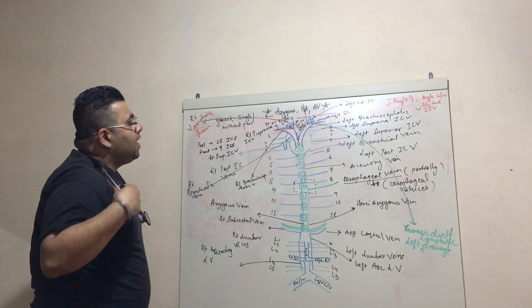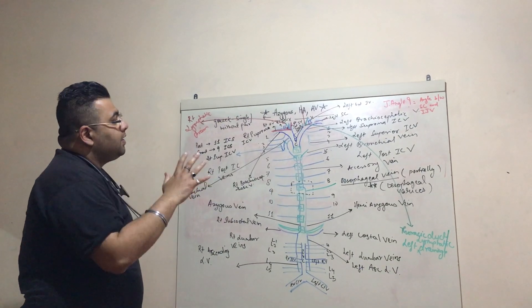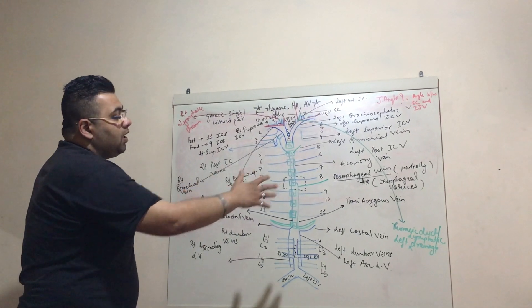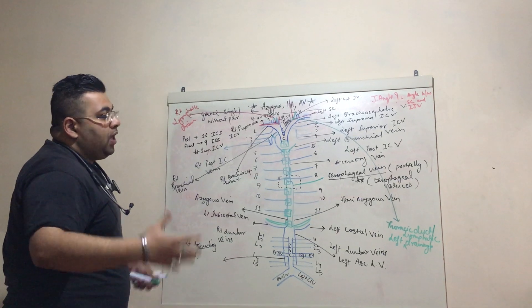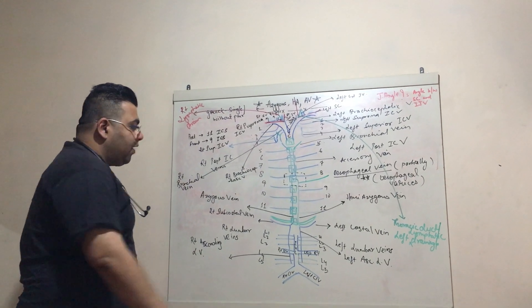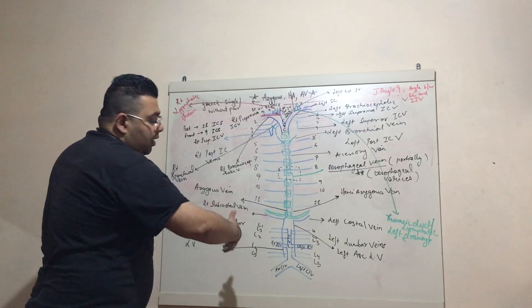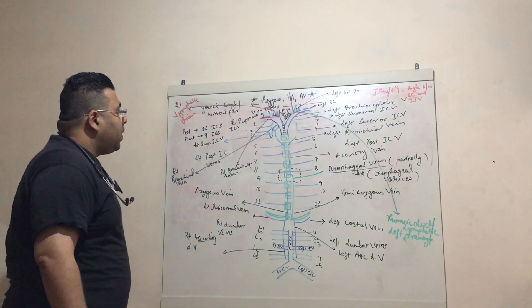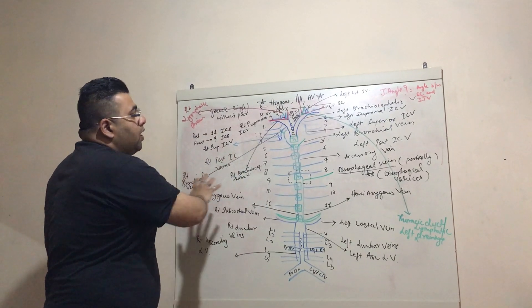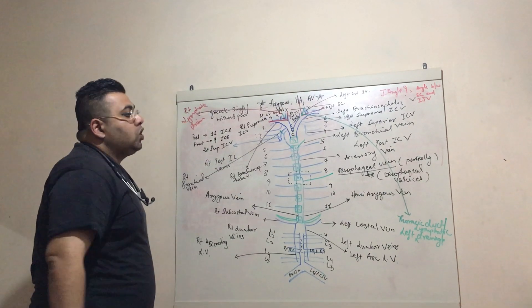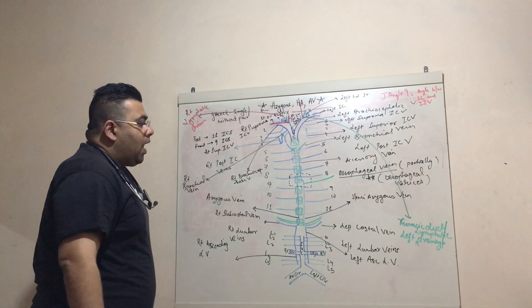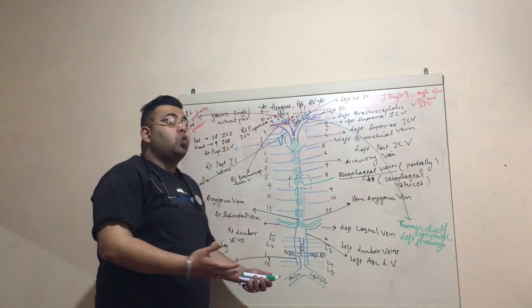With this, I finish today's explanation of the azygous, hemi-azygous, and accessory vein, including the right and left lymphatic drainage, the jugular angle, why the left renal vein is longer than the right, and the drainage of the right and left bronchial veins and the esophageal vein.